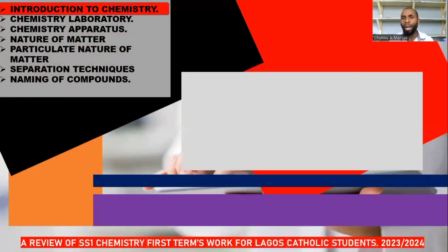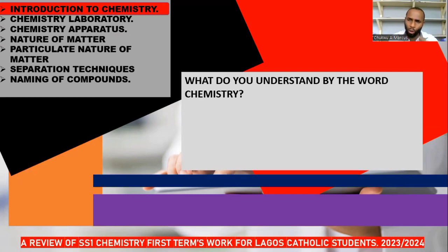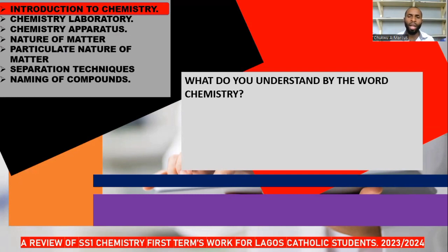Let's start with introduction to chemistry. When we started chemistry, we started by defining what chemistry is all about. Your teacher might have given you many definitions. According to me, chemistry is a branch of pure and physical science that deals with matter — its composition, structure, properties, the changes matter undergoes, the principles governing those changes, and the uses of matter. This definition covers everything about matter, which relates to the topic of nature of matter.